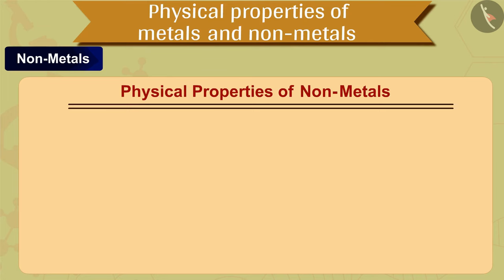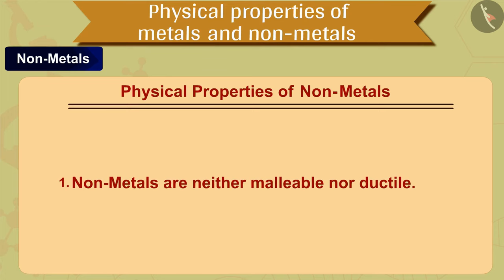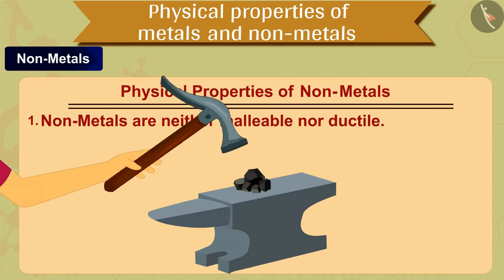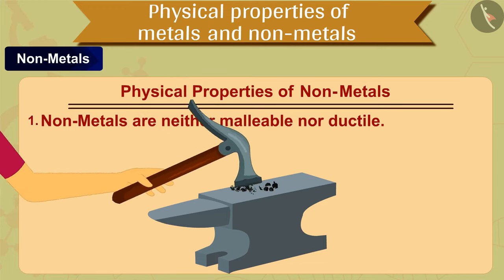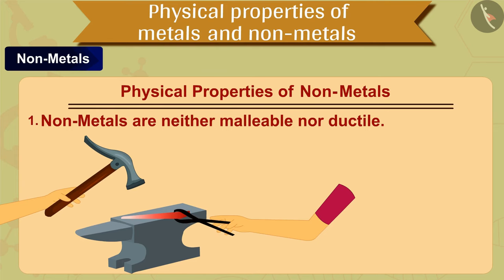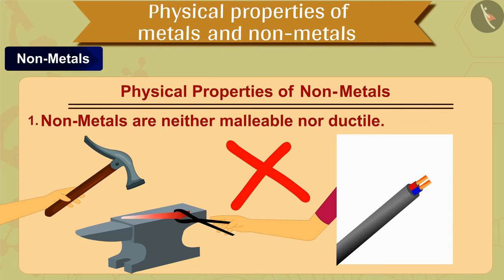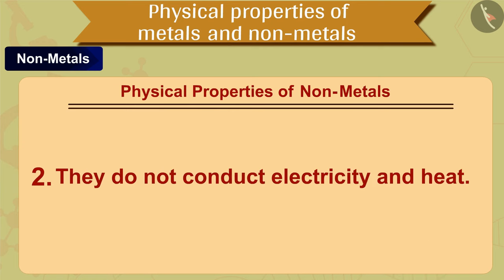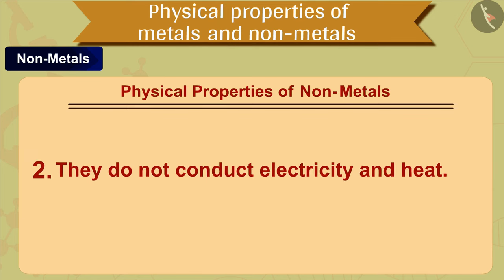Now let us move to the physical properties of non-metals. The first property of non-metals is that they are neither malleable nor ductile — they are brittle, meaning they break easily. Therefore, solid non-metals can neither be hammered into thin sheets nor drawn into wires.